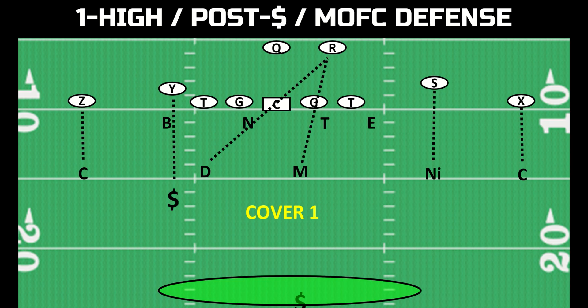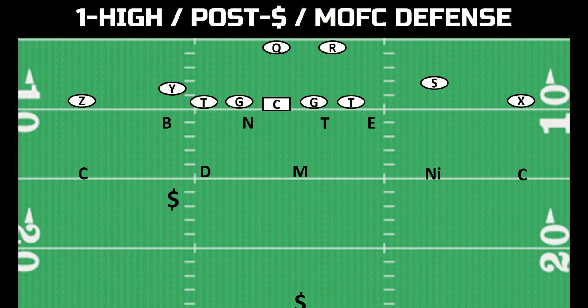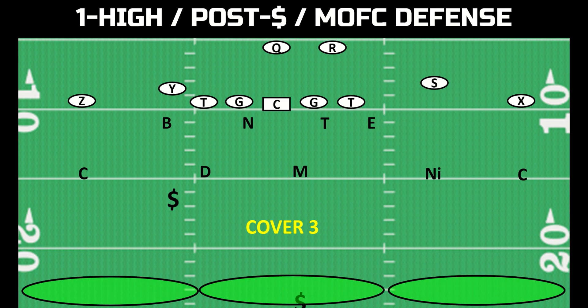The other type of coverage in post safety, middle of the field closed, or one high defense is called cover three. This is when you have three deep defenders and then four underneath defenders, assuming we are rushing just four to the quarterback. Even within cover three, there are two different ways to play it — a true cover three version and a match cover three version, each with their own dedicated video. But for now, just think of cover three as three deep zones.